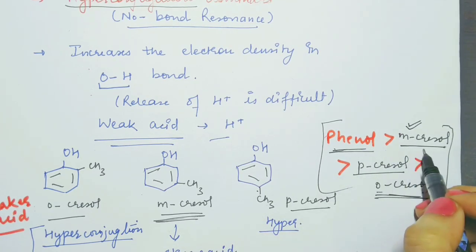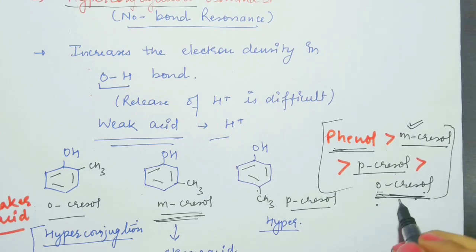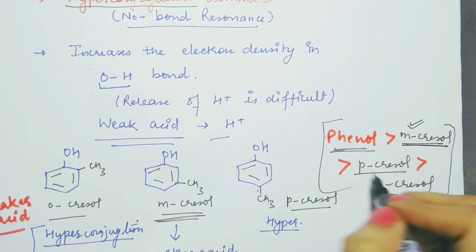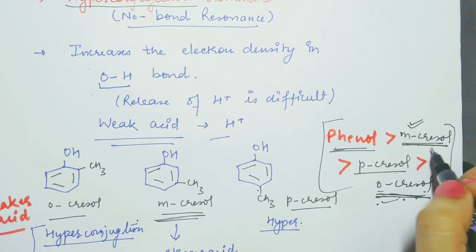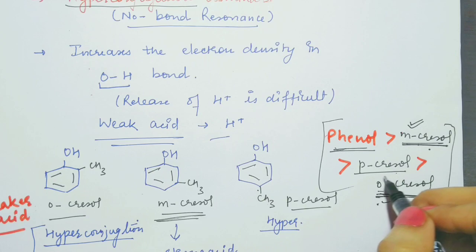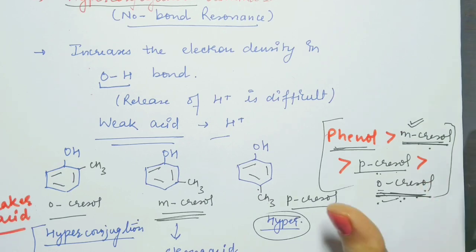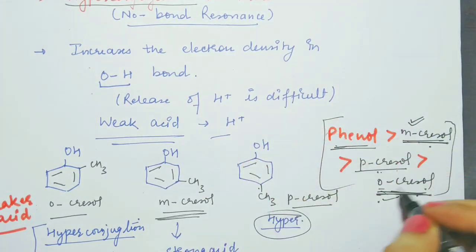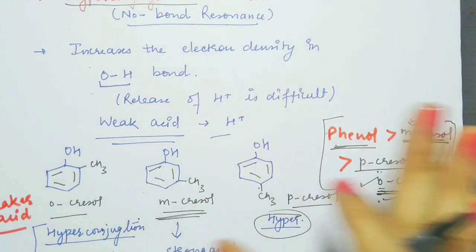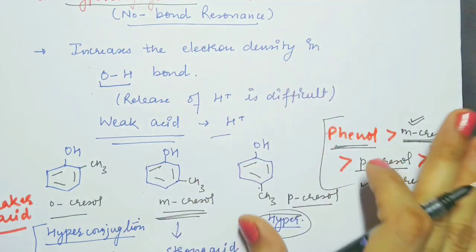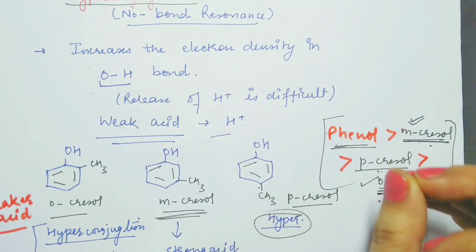So the acidic strength order is: phenol > meta-cresol > para-cresol > ortho-cresol. Ortho-cresol is the weakest acid and meta-cresol is the strongest acid among the cresols. Meta-cresol has very little hyperconjugation effect; para-cresol shows only hyperconjugation; ortho-cresol shows both hyperconjugation and +I effect, making it the weakest acid. This is all about the effect of electron donating groups on the acidic behavior of phenol. Earlier we had done electron withdrawing groups.